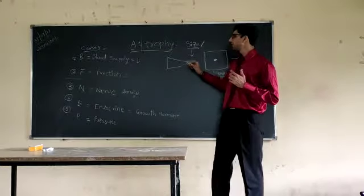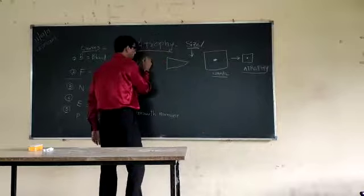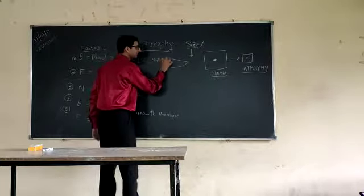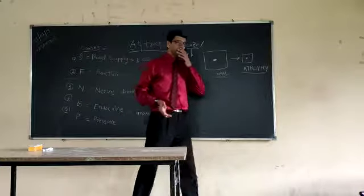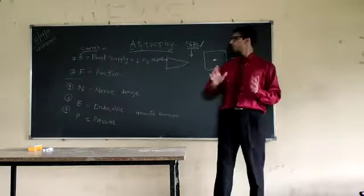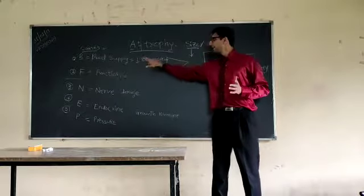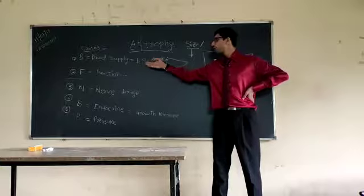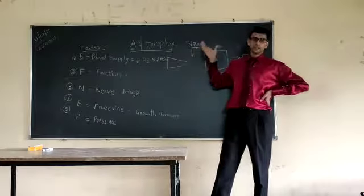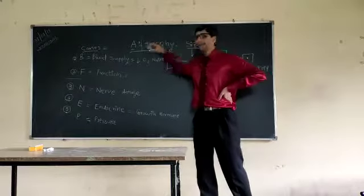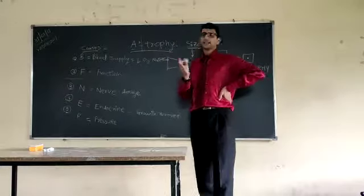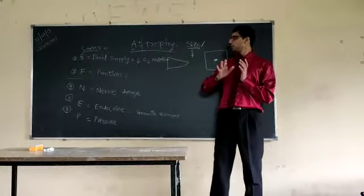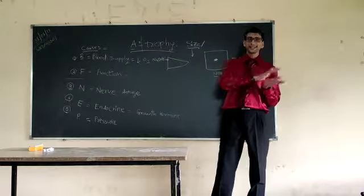So reduced blood supply means reduced oxygen, reduced nutrition and as we say, if we do dieting, size will reduce. So concept is different. They are telling us to avoid fatty foods. But just for understanding purpose, I have given this dieting example.